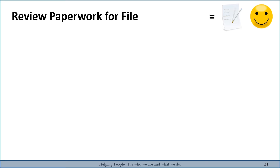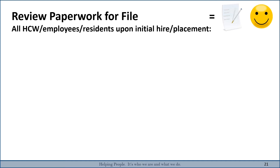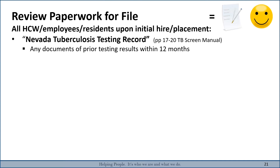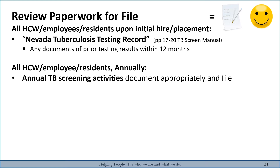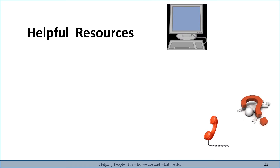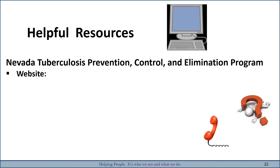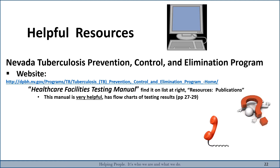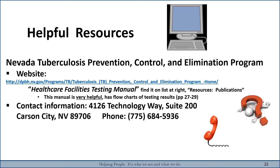Reviewing the documents and paperwork needed for the file: for all healthcare employees and residents on initial hire or admission, you need the tuberculosis testing record and any documents of prior testing within the last 12 months. For all healthcare workers and residents annually, you need the annual TB screening activities, any past positive TB test documentation completed annually, the signs and symptoms questionnaire, and chest X-rays. A helpful resource is the Nevada Tuberculosis Prevention, Control, and Elimination Program website listed on the slide, where the Health Facilities Testing Manual is found under Publications. It includes flowcharts of testing on pages 27 to 29. The address and phone number for the TB control program are also listed, along with the CDC website, which provides the guidance for all TB testing results and requirements.